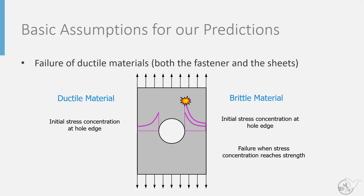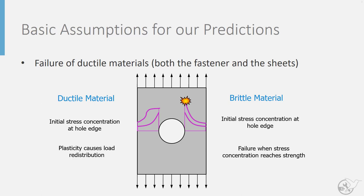In a ductile material things are a little bit different. It will not suddenly fail; rather, as we increase the load, the material will start to yield or plastically deform, which will cause a redistribution of stress along the width of the plate. At final failure it is a simple approximation that you will have a uniform stress along the width of the plate equal to the ultimate strength of the material.